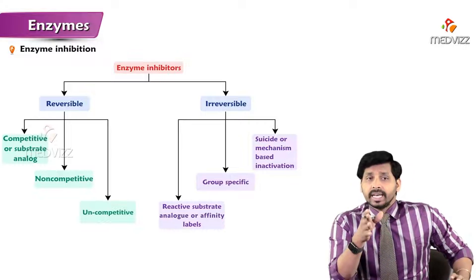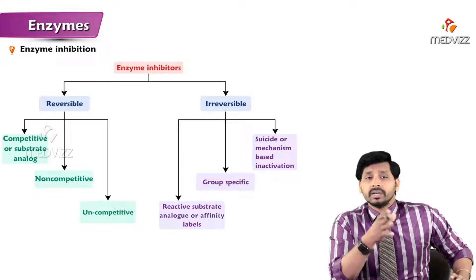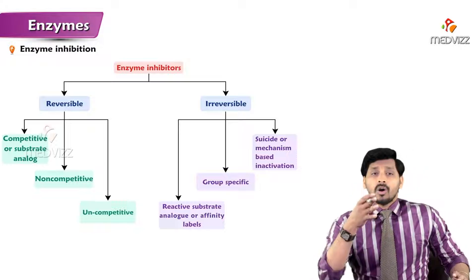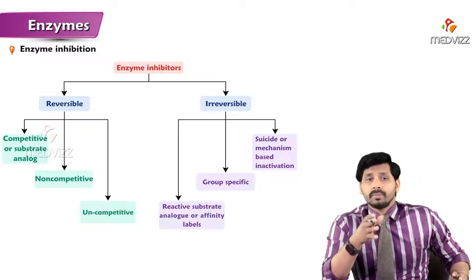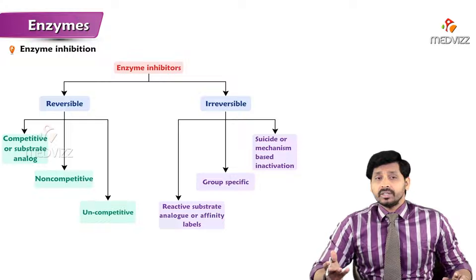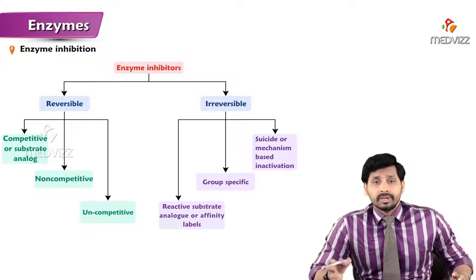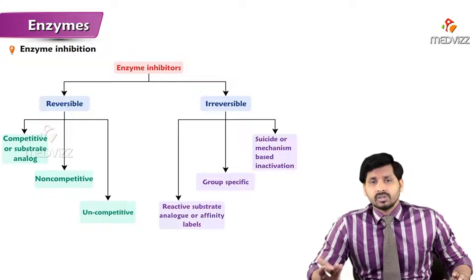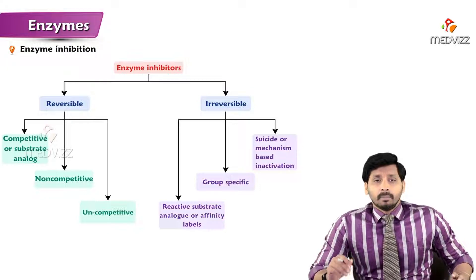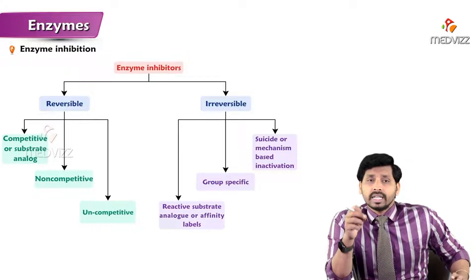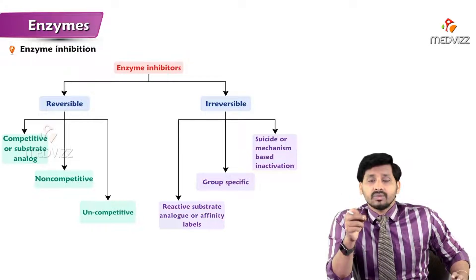Reversible inhibitors are subcategorized into three types: competitive inhibitor, non-competitive inhibitor, and uncompetitive inhibitor. In competitive inhibition, there is a huge competition between the inhibitor and the substrate. In non-competitive inhibition, there is no competition between substrate and inhibitor. Uncompetitive inhibition is similar to non-competitive, but the inhibitor binds to the enzyme-substrate complex rather than to the free enzyme.